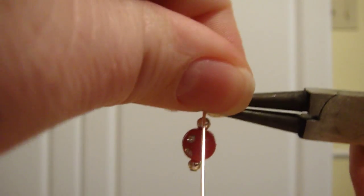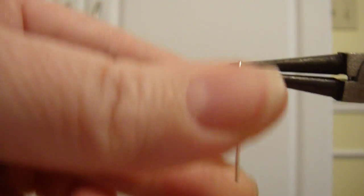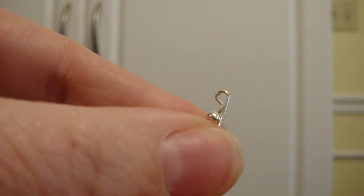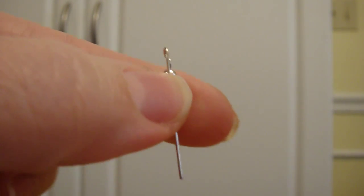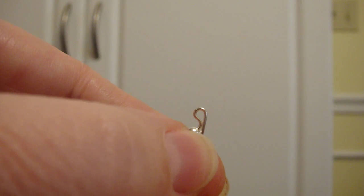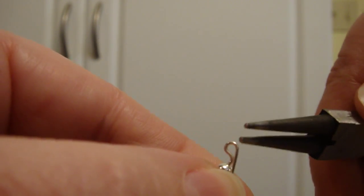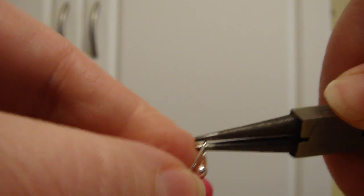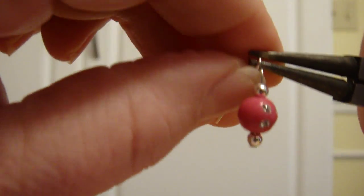Now I'm going to take the pliers out and stick it back in. I'm going to stick it right through that hoop, fold it all the way away from me, and then just start wrapping it around this way.